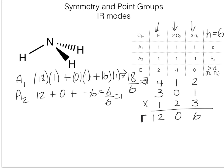And finally for E: two times twelve is twenty-four, plus zero plus zero. That is twenty-four divided by six, which is four E representations.